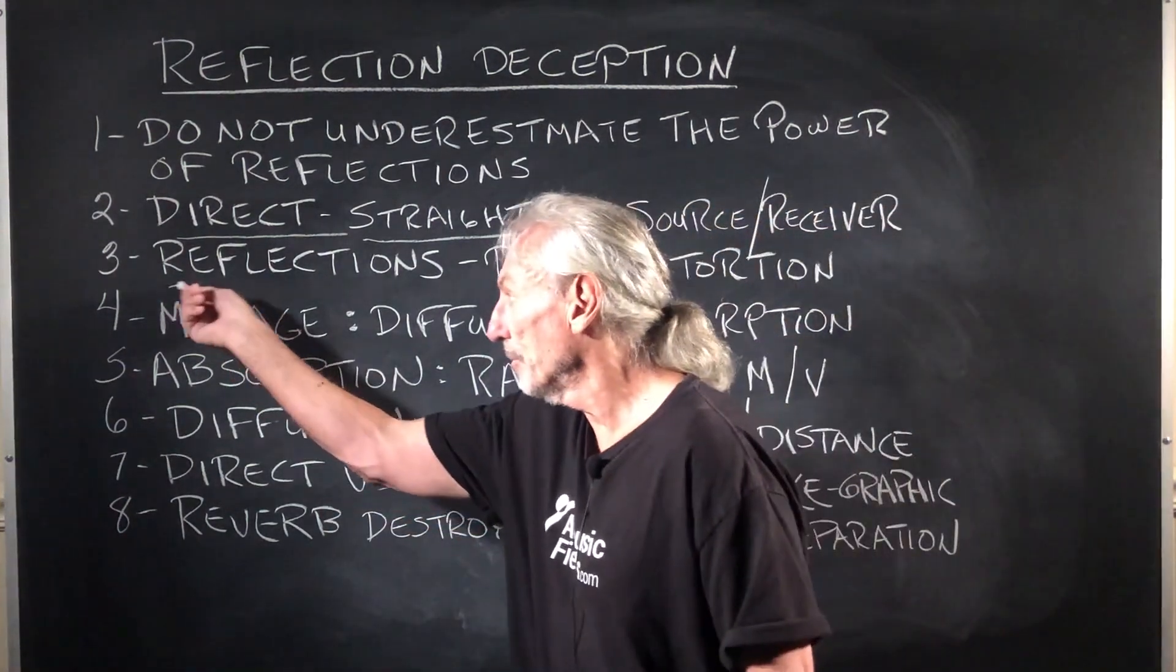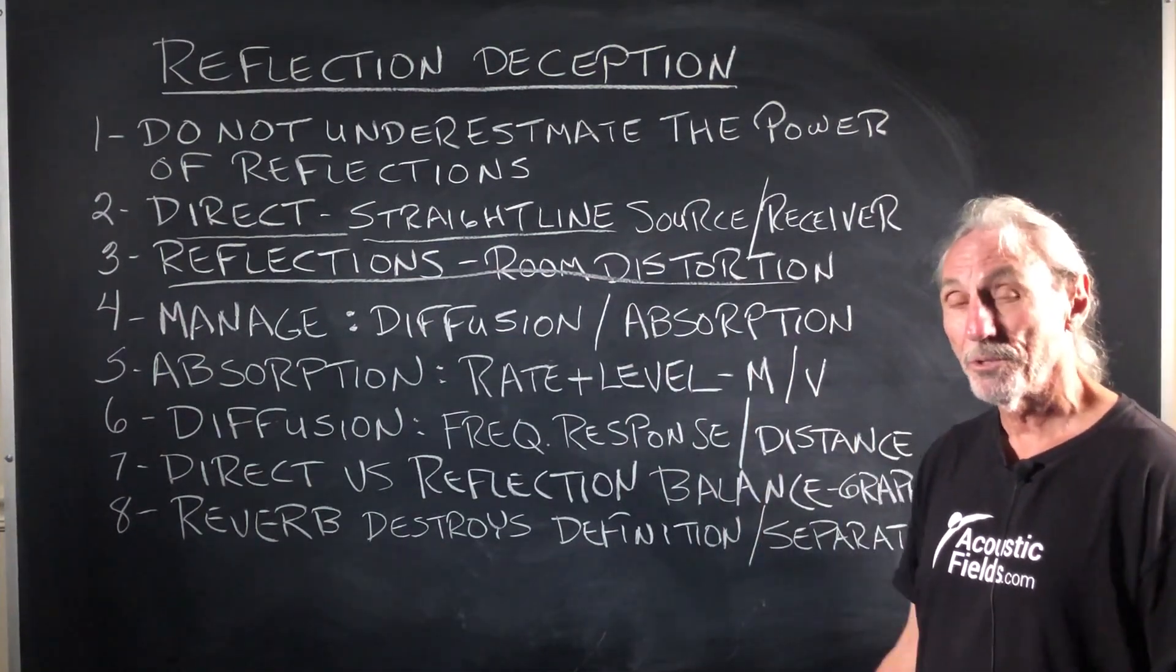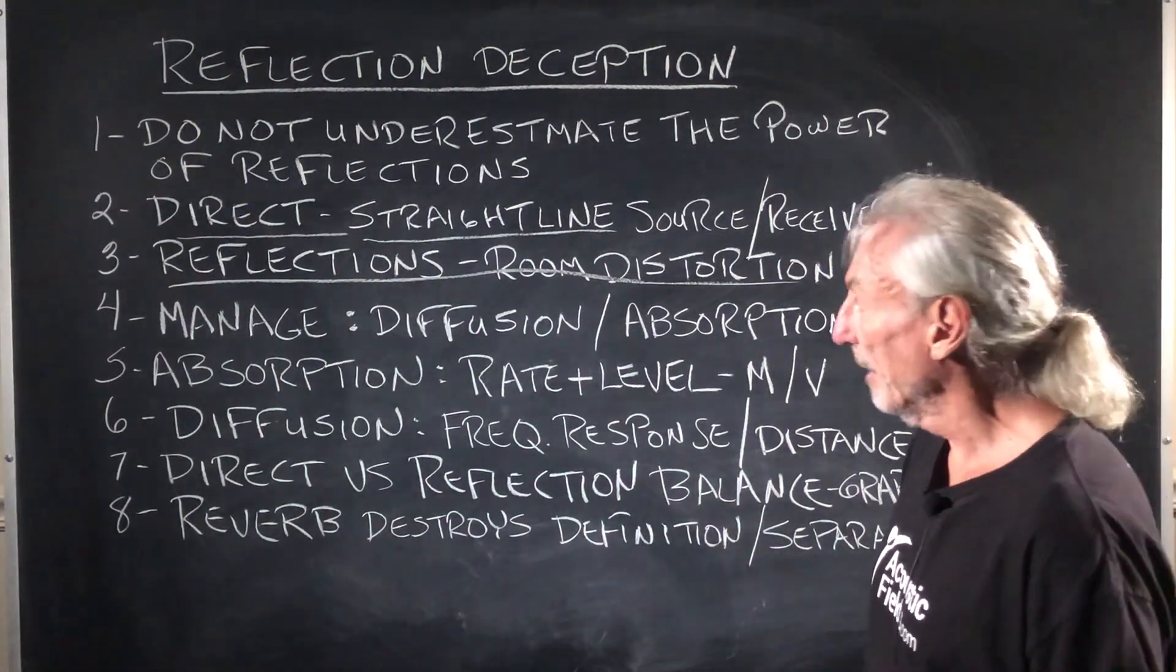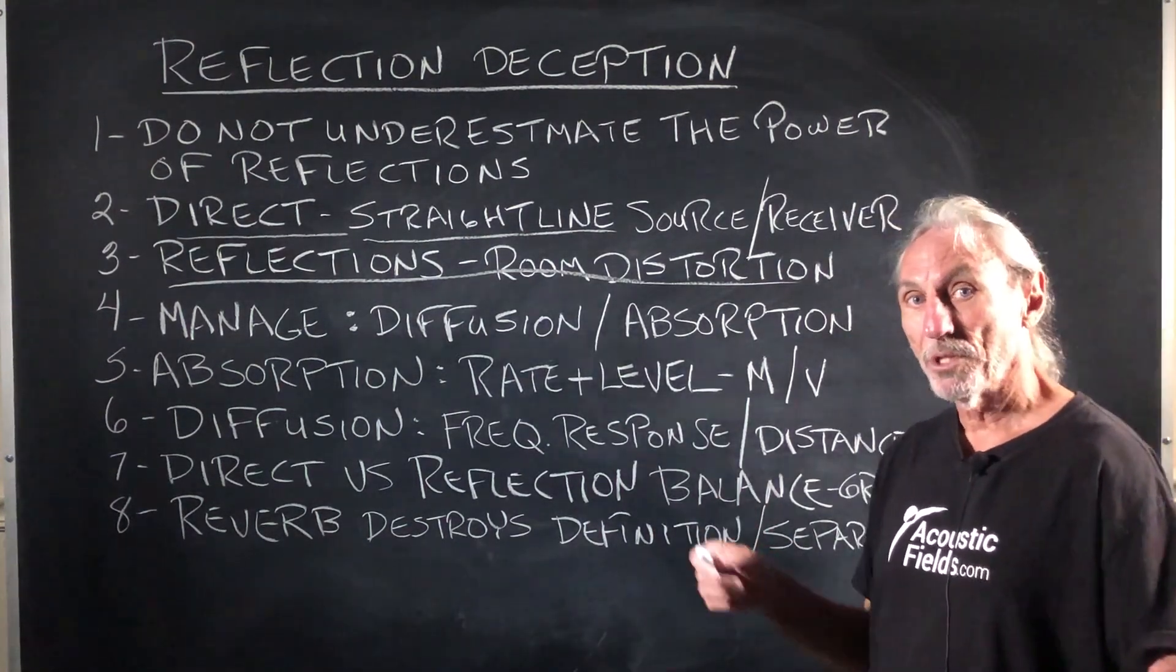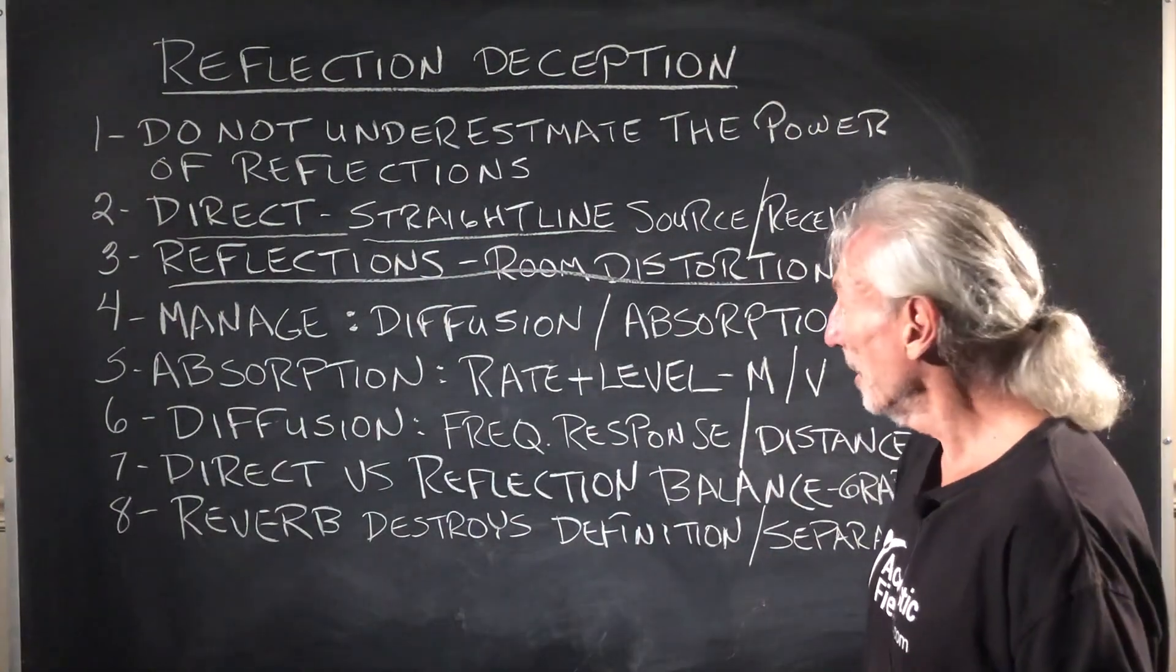So that's the straight line sound from our speakers to our ears. But unfortunately in rooms with boundary surfaces, we have all of these reflections off the walls. Those are distortions. Okay, so you have to be really careful with that. You get too much room distortion, you're out of balance. And the direct energy from your speakers, you're not going to hear it well.